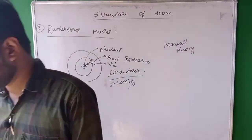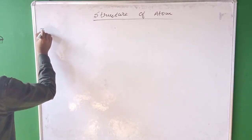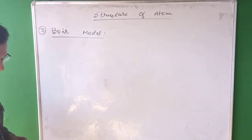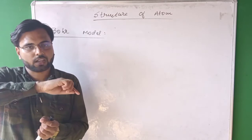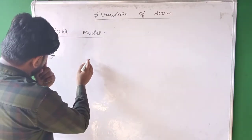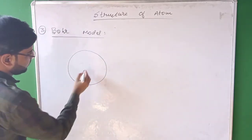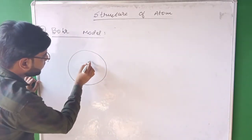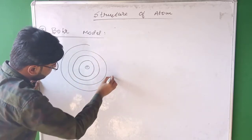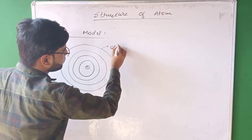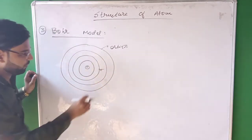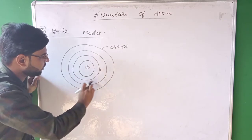So another model was introduced — that is called Bohr model of atom. Bohr proposed that if an electron is revolving around the nucleus, that electron must revolve in fixed energy states. Suppose this is the atom and this is the nucleus. The electron must revolve around fixed energy states, and these fixed energy states were later called orbits. If any electron is revolving in any orbit, the energy of that electron should be equal to the energy of that orbit.